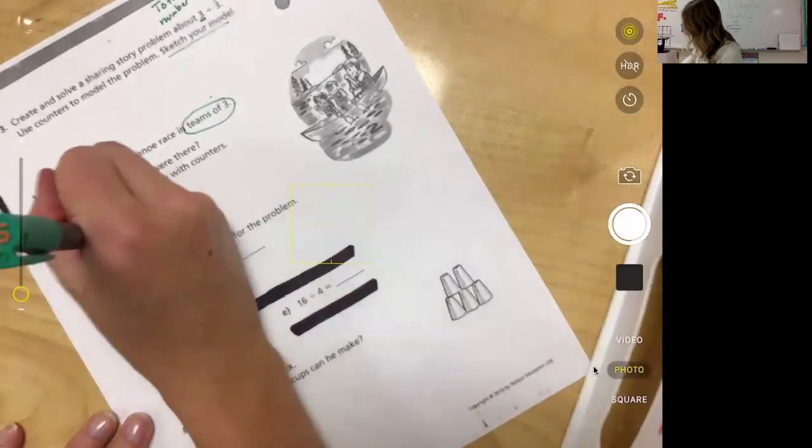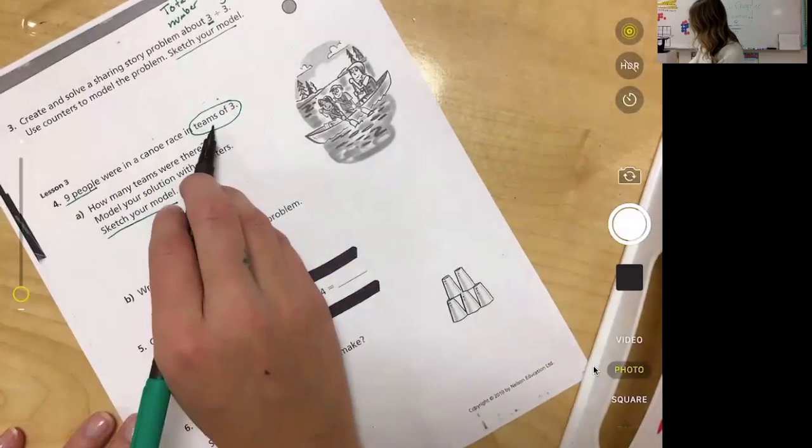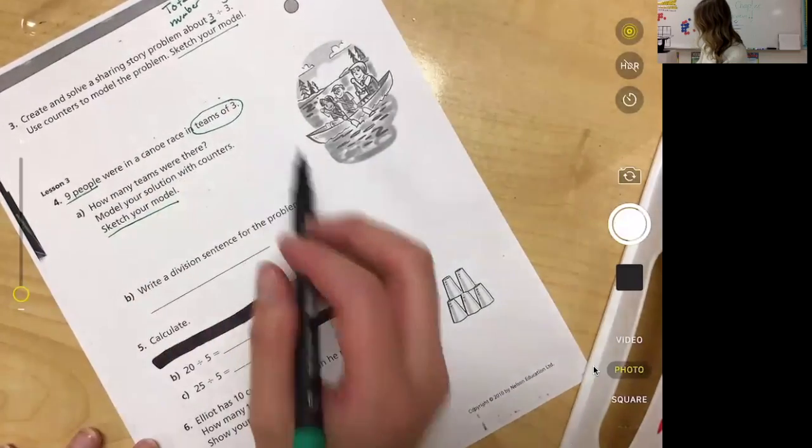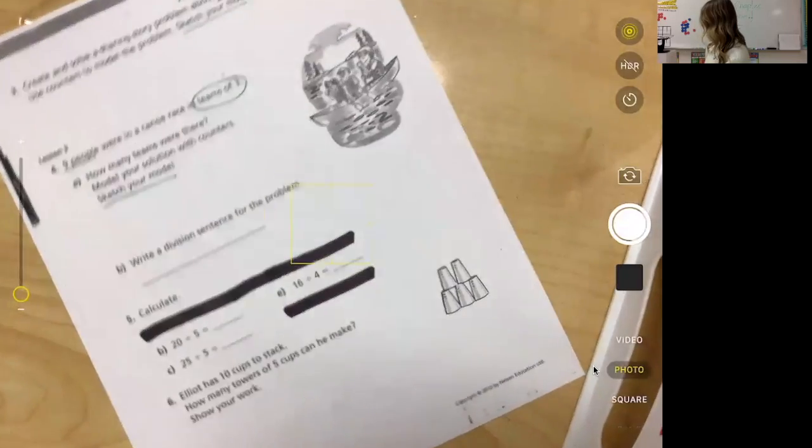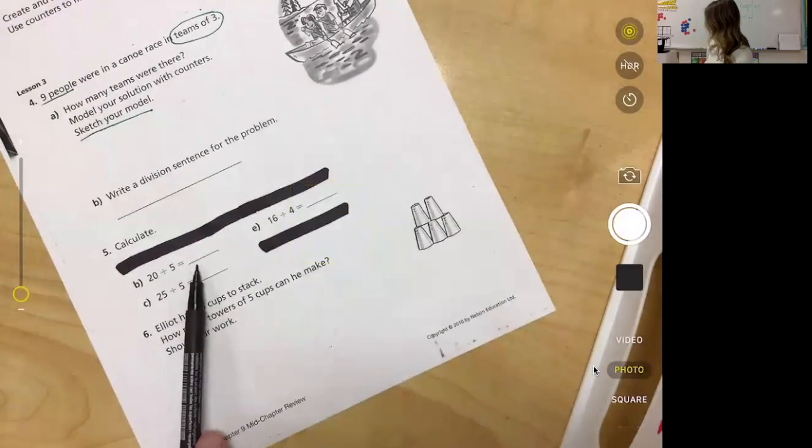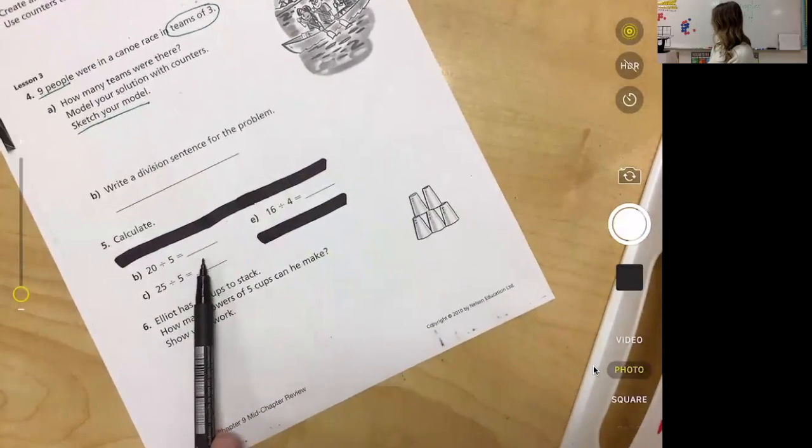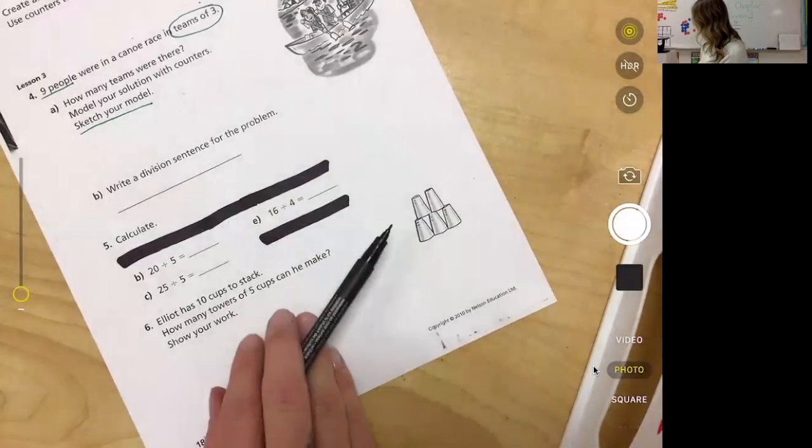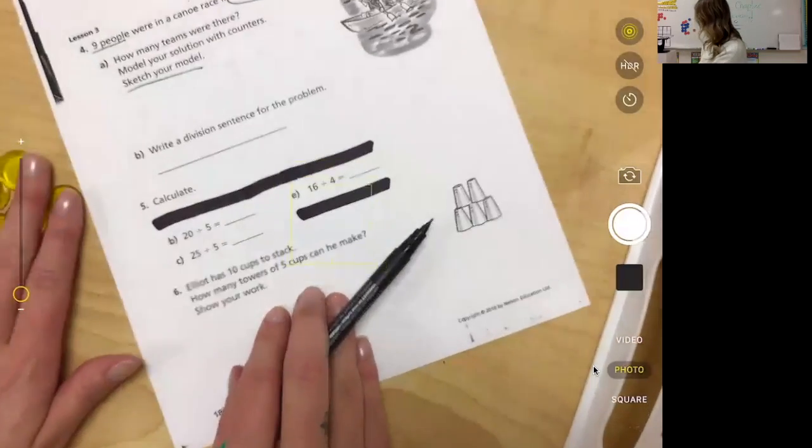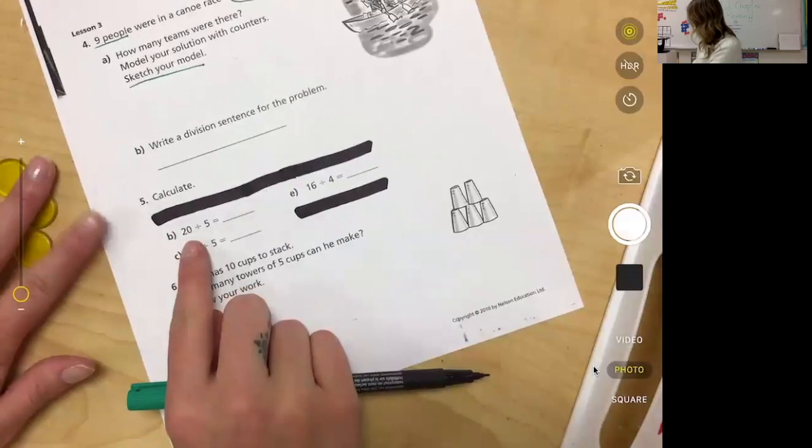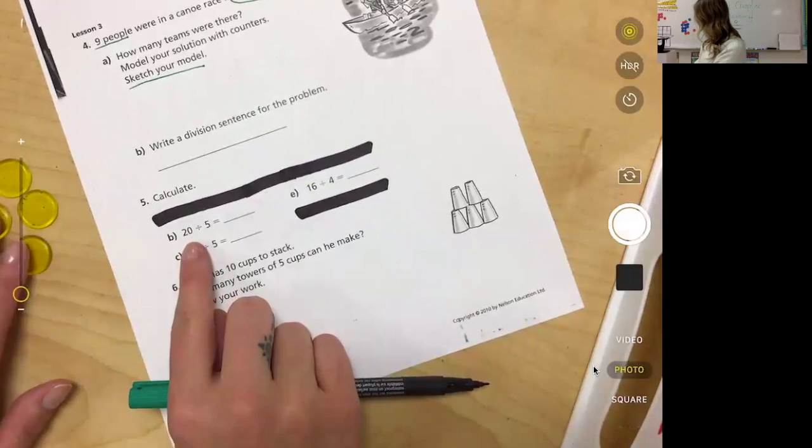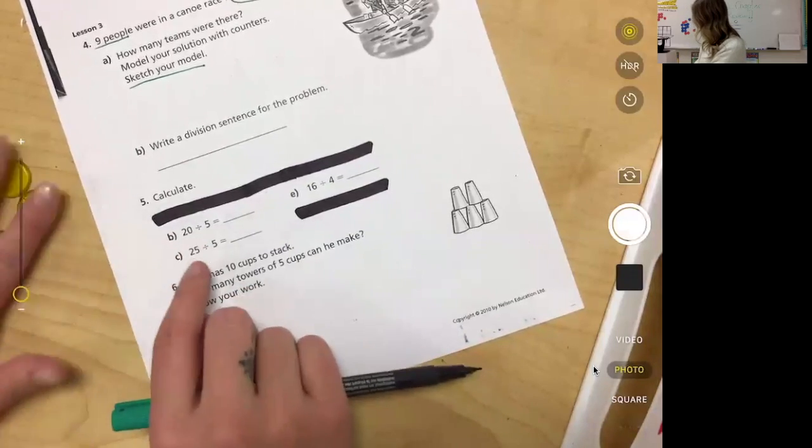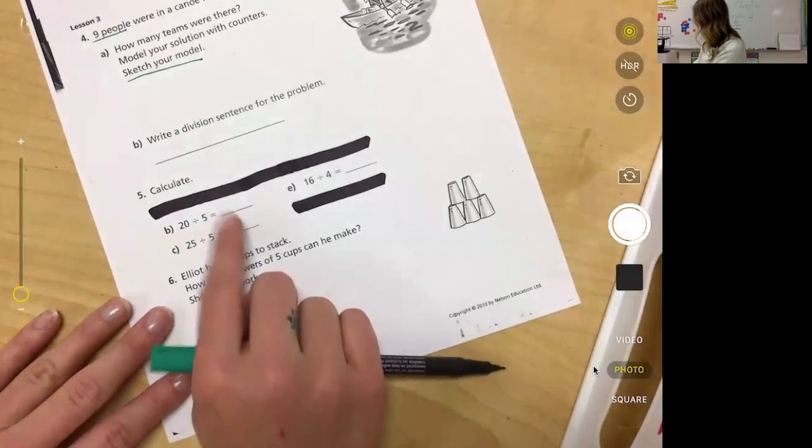Draw your big altogether number. Remember it says the sketch and then find your teams of three, circle them, and draw your division sentence down here. Calculate if you can do this in your head by now, that's amazing. You can write the answers. If you're still having trouble getting this down in your head, that's where you use your counters. You get your 20 counters, you can divide them into groups of five. Either way you're going to find your answer.